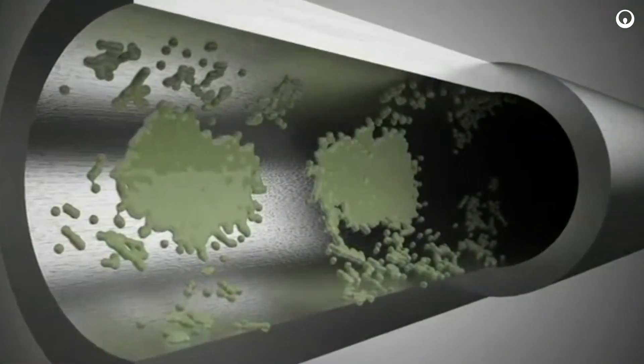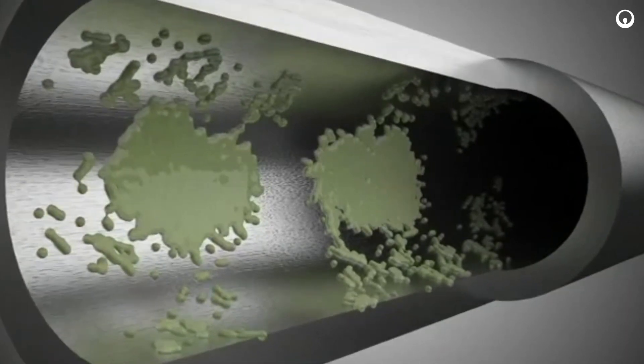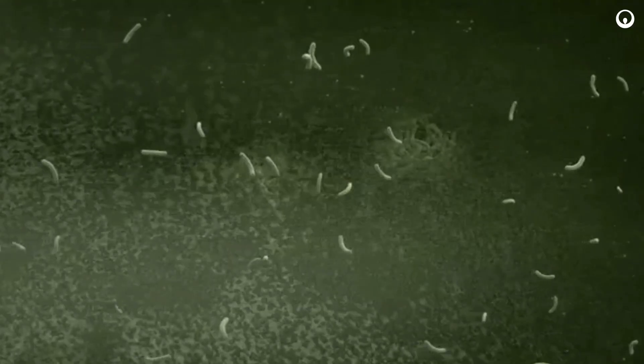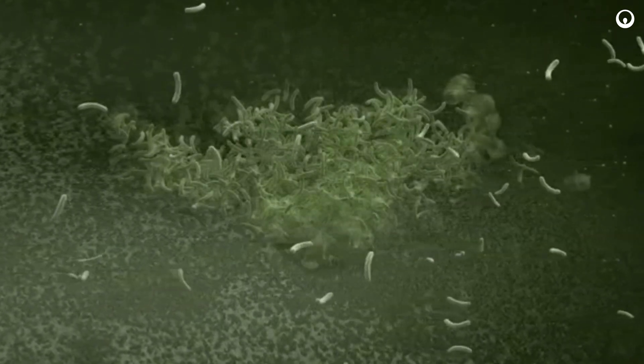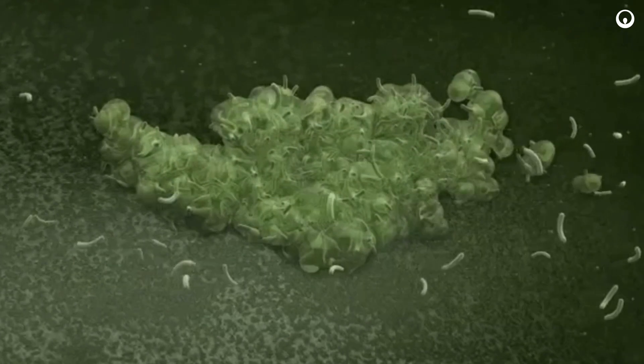But how does this process work, and how can we effectively prevent it from occurring? As microbes attach to the surfaces of a heat exchanger tube, they grow and replicate, forming microcolonies that then produce a biofilm.